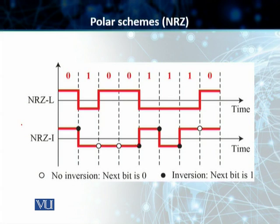In the first case, NRZ-L, the difference in level represents a zero or a one bit. In NRZ-I, the inversion or the non-inversion represents what the next bit is going to be.